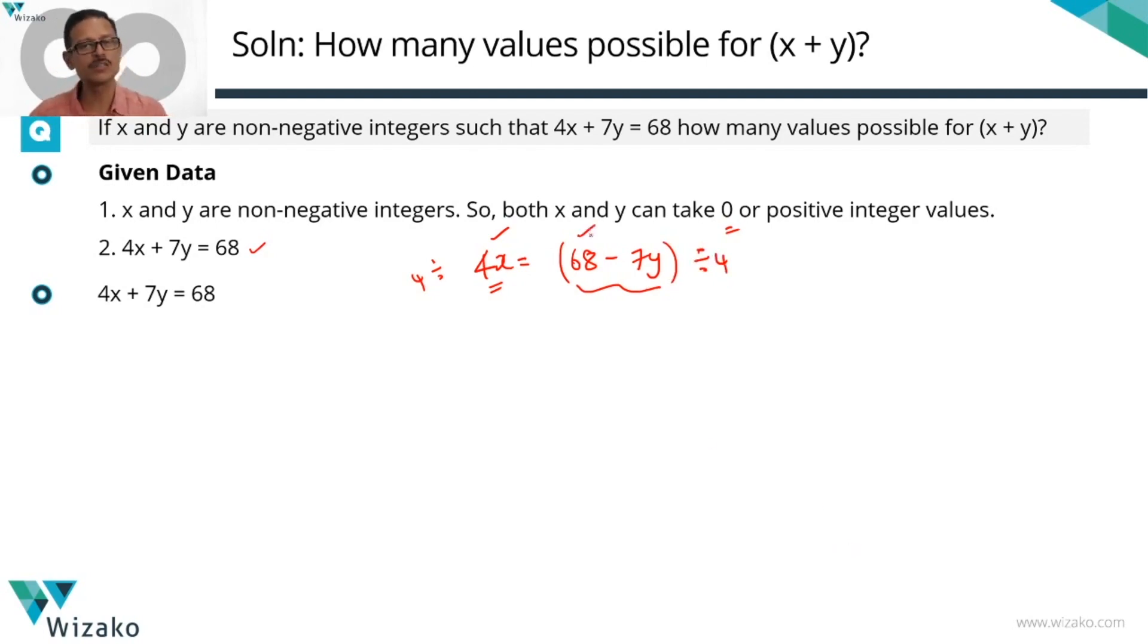68 minus 7y. 68 is divisible by 4. Therefore, unless 7y is also divisible by 4, 68 minus 7y cannot be divisible by 4. So in this entire discussion, the key inference I've drawn is 7y is divisible by 4.